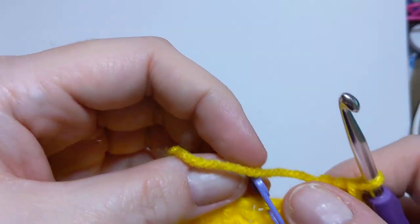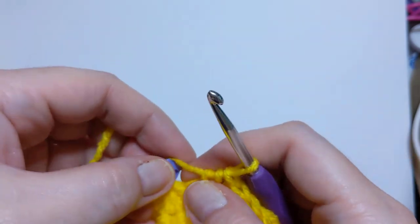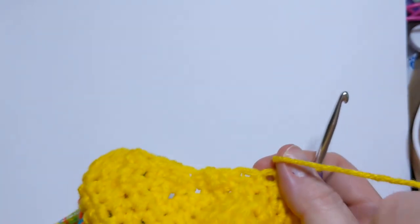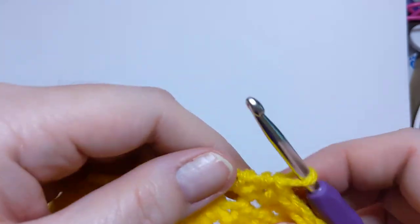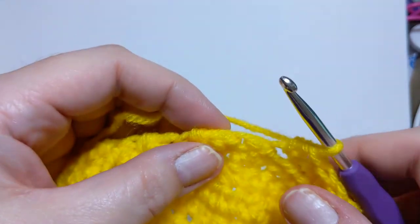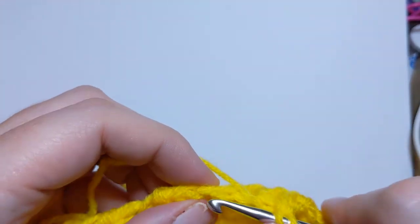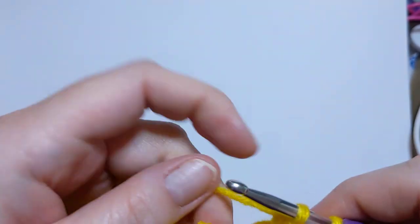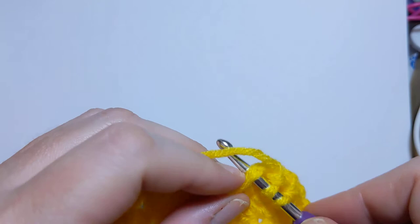We've met up with the stitch marker. Hello, stitch marker. Take it out, plop it aside. And I know that these two, I need to crochet together. So, yarn over, pull up a loop, go through two, go into that final stitch, pull up a loop, and go through all three.